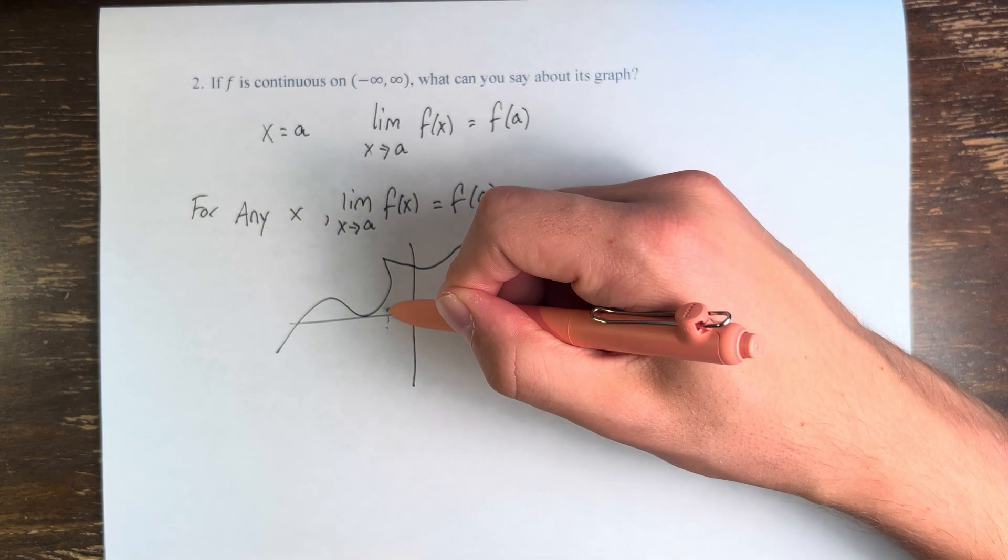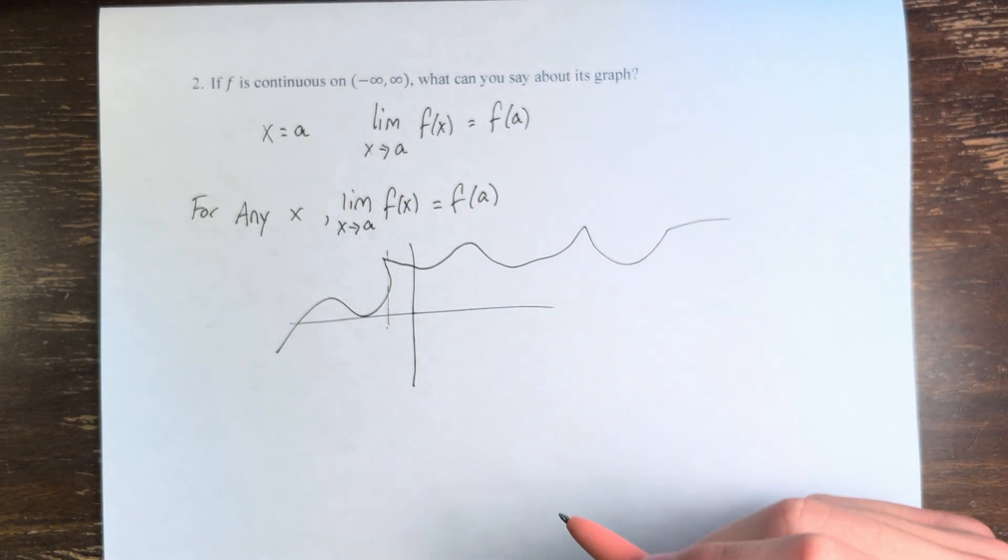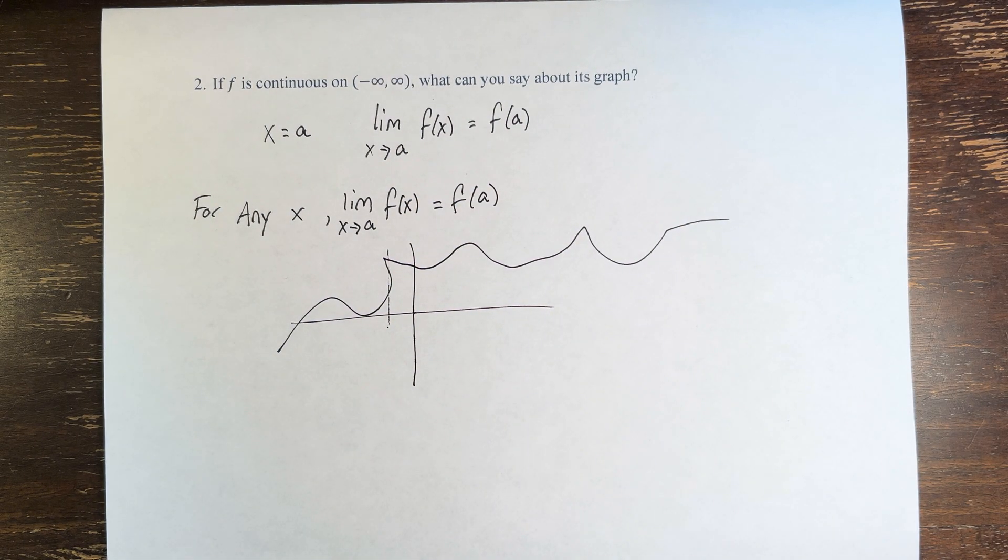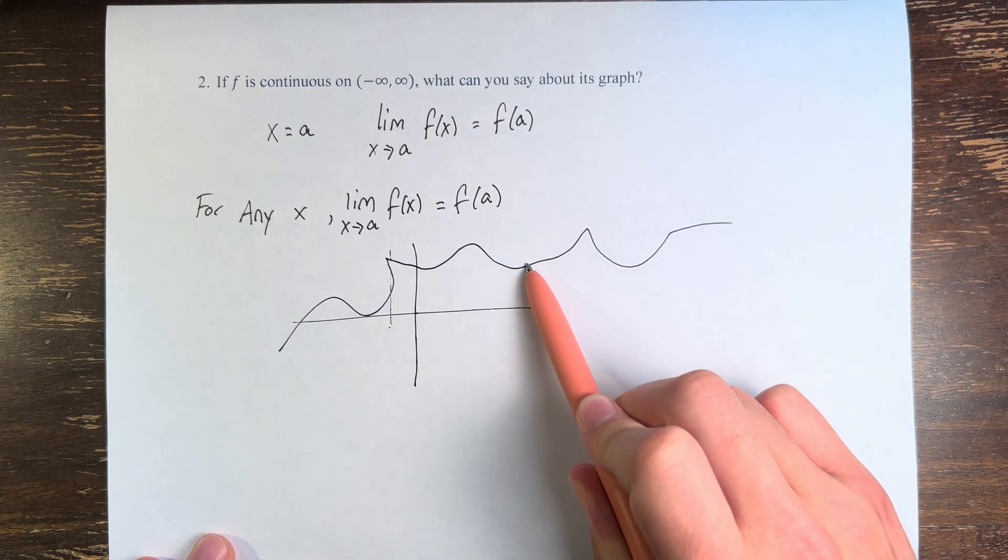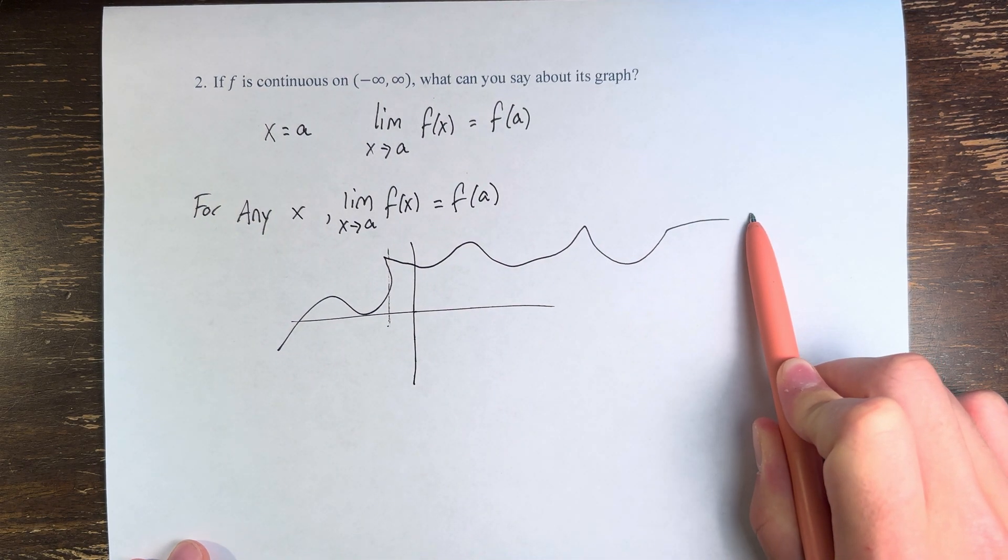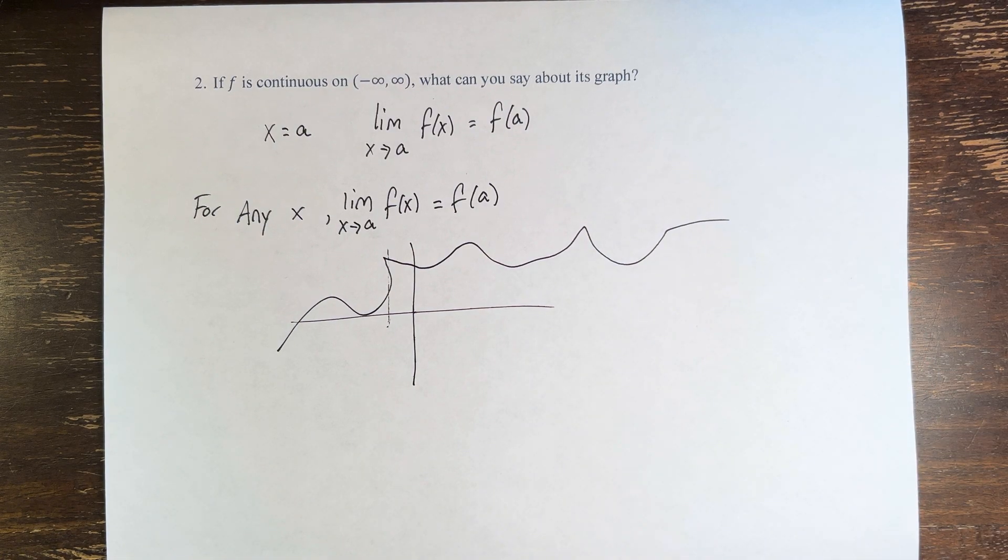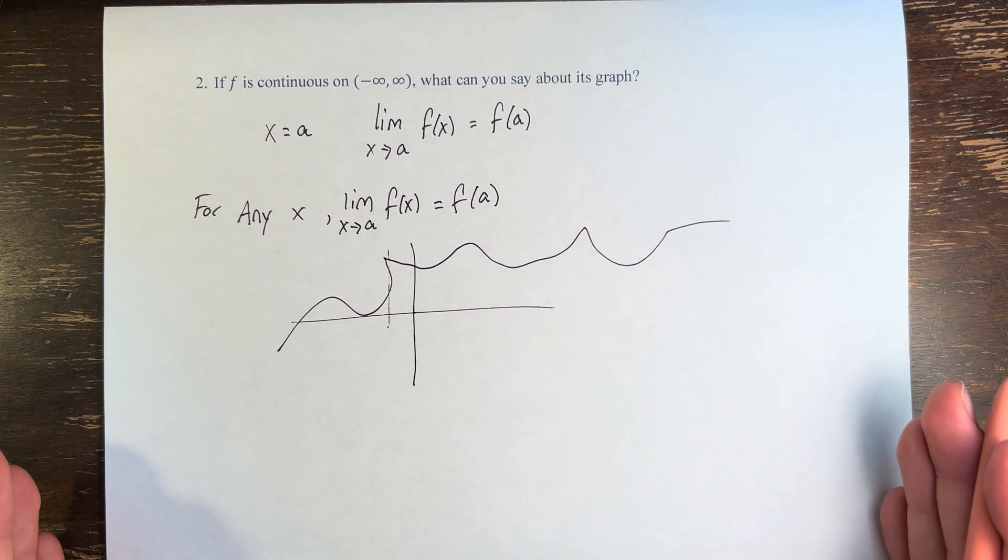I guess technically right here it breaks the vertical line test, but ignoring the fact that my drawing isn't perfect, it can be any shape, but it is a curve that does not have any breaks in it. There's no asymptotes, there's no holes, it's continuous throughout the entire range of all real numbers.